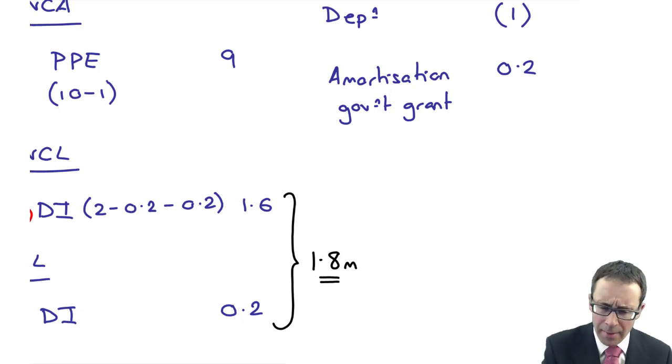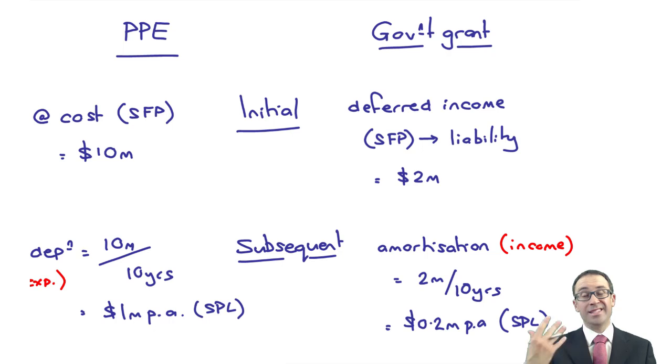So when you're thinking about the explanation, the detailed explanation in the answer at the back of the notes, I don't want to rewrite it. It's just a little bit worthless. We've chatted our way through it. So when you're thinking about it, think two bits, PPE, government grants. Think about initial recognition, subsequent treatments. Think about the financial statements. We've spoken about SFP and profit or loss.